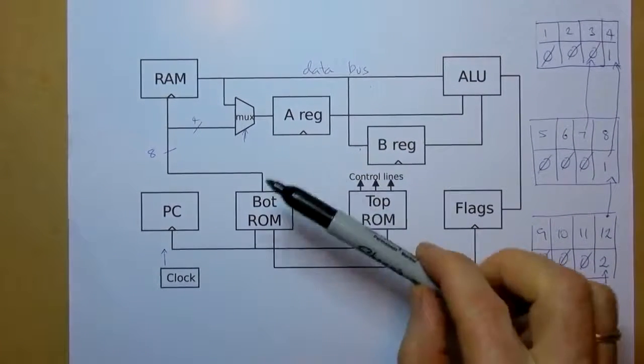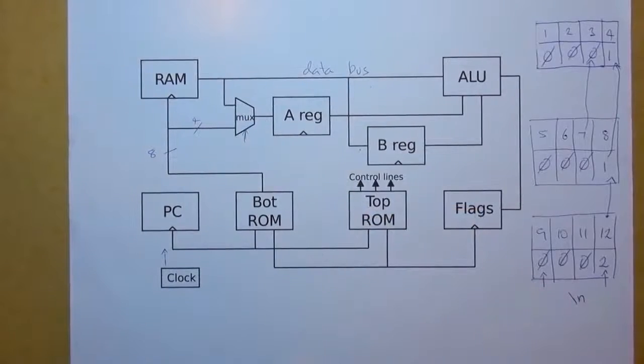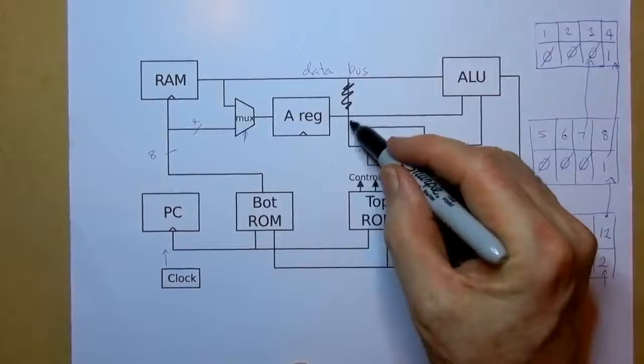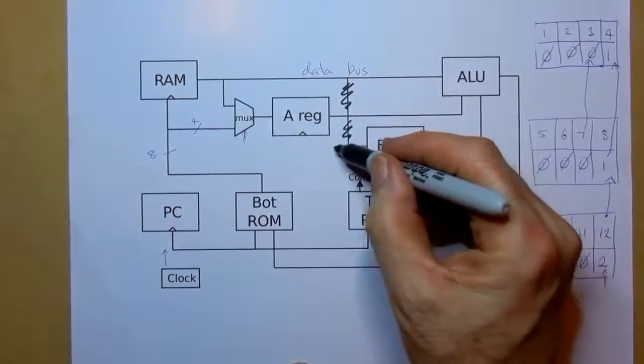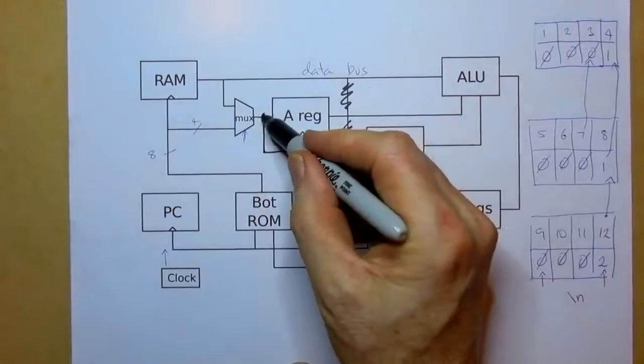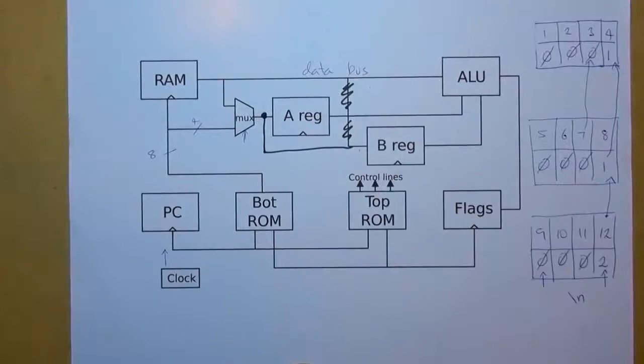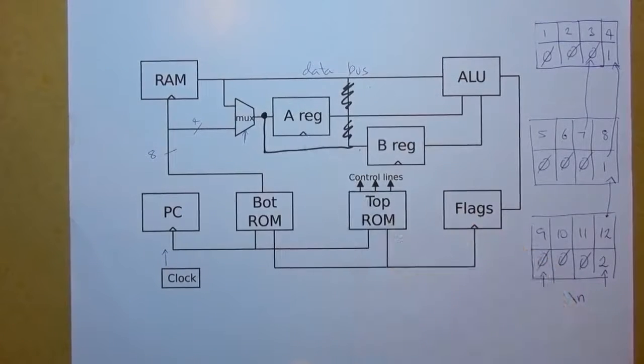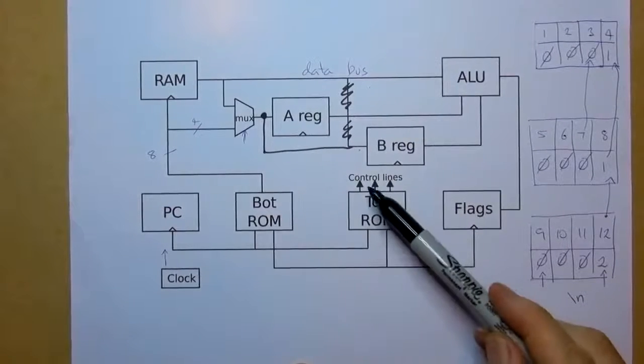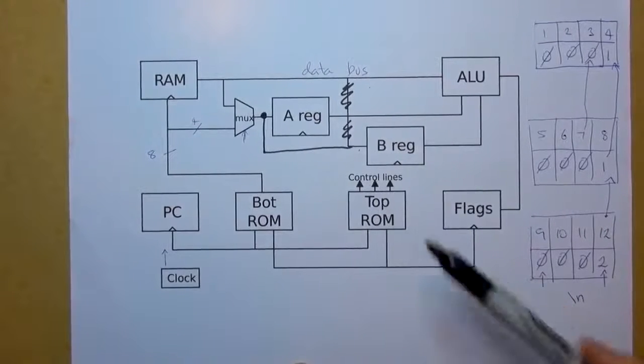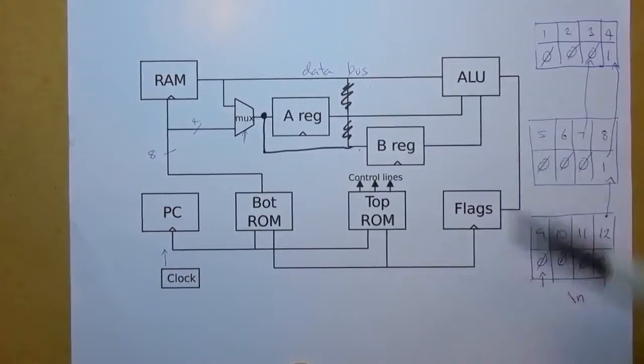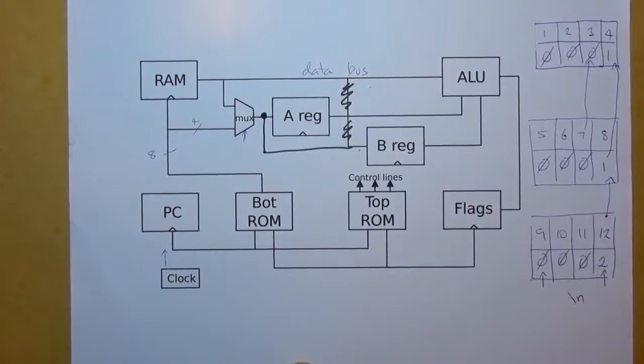So back in version 1 we have the A register attached to the multiplexer but the B register was connected to the data bus. So version 2 we're going to take that out and wire up the B register also to the multiplexer. That allows us to do both loading the A register with a constant from the address ROM and also now load the B register from the same place. And one more thing we can now use one of the control lines from the top ROM as an extra bit into the ALU and that gives us 16 ALU operations.